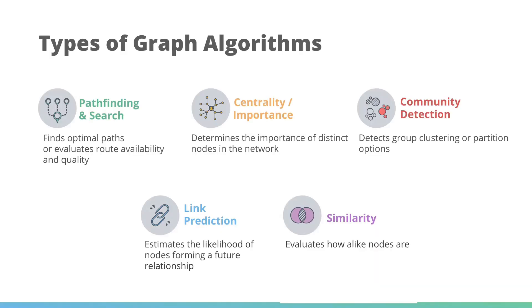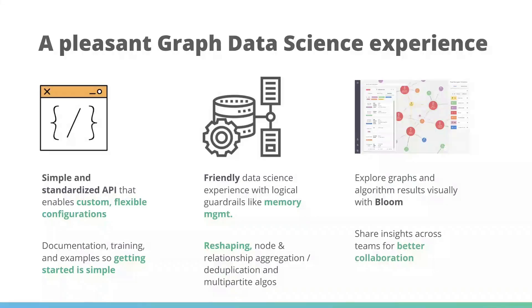So what types of algorithms can we run on it? There are five different types. We've got pathfinding and search — finding the shortest path between two places. We've got centrality — finding the important nodes in a graph. We've got community detection — finding clusters or partitions in a graph. We've got link prediction — how likely a node is to form a future relationship. And then we've got similarity algorithms, which tell us how alike two nodes are.